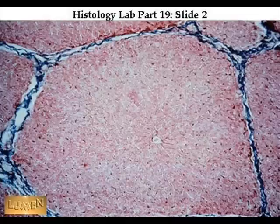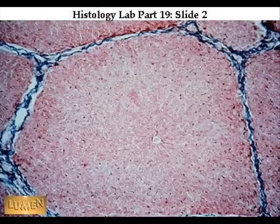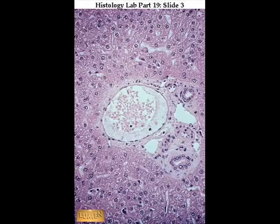This is an electron microscope image of the liver cells, with the white vessel being the central vein surrounded by many of the other vessels. One region is surrounded by the interlobular vessels of the liver.